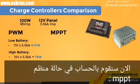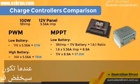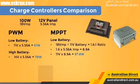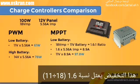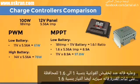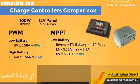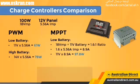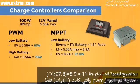Now let's do the math with an MPPT charge controller. When the battery is low, it drops the voltage from 18 volts down to 11 volts — a ratio of 1.6 (18 volts divided by 11 volts). So when it drops the voltage by a factor of 1.6 to keep power constant, it increases the current by 1.6 as well, raising the current from 5.56 amps to 8.9 amps. 11 volts times 8.9 amps equals 97 watts — compare that with the PWM output of only 61 watts.